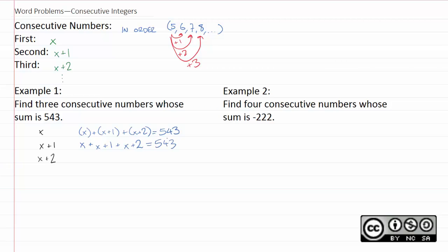We still have 543, and now I'll just add all my x's and get 3x. One plus two is obviously three. I still have 543. And now this should be a pretty basic algebra problem. Subtract three. We get that 3x is 540. Divide by three. And x equals 180.